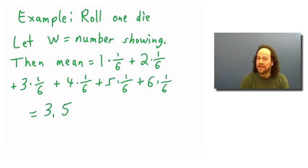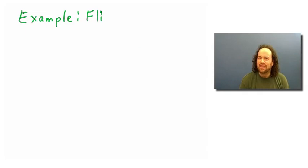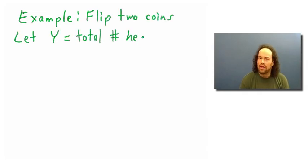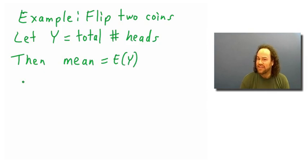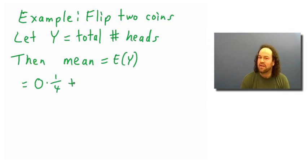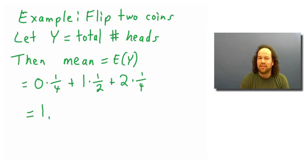So on average, if you roll a die, the expected value is 3.5. Going back to the coins example, if we flip two coins, the expected number of heads is computed as 0×(1/4) + 1×(1/2) + 2×(1/4), which works out to 1 — which is what you might have expected.